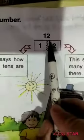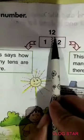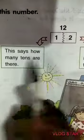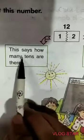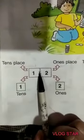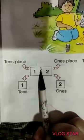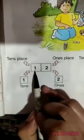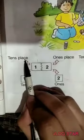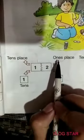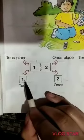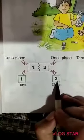Read first, look at this number. This number is 12. It is divided into two parts. This says how many tens are there. This says how many ones are there. Look, it's a number 12. It is divided into two parts. One part is tens place and second part ones place. So, one tens, two ones.